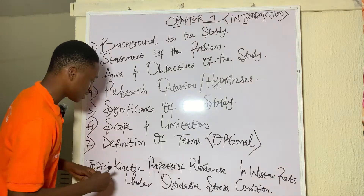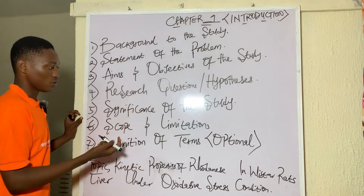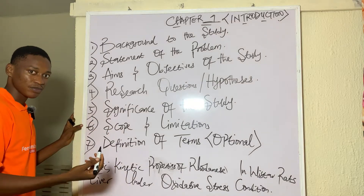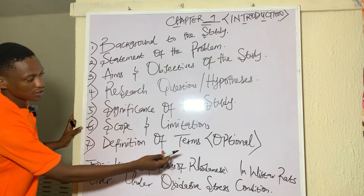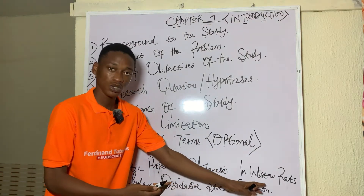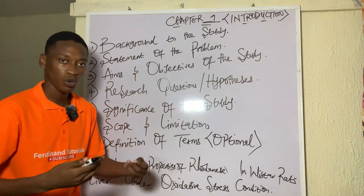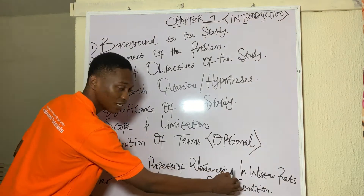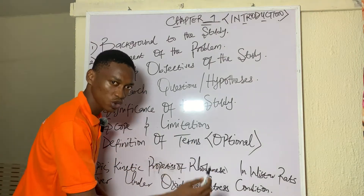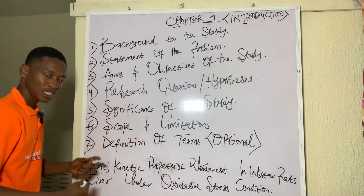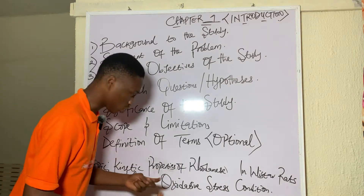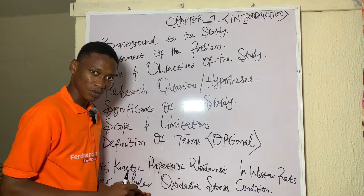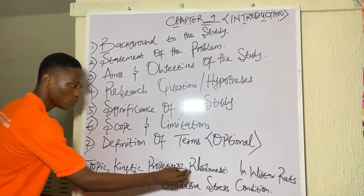For instance, with our topic, in the background I might say: rhodanese is a detoxifying enzyme in cyanide metabolism. The properties of rhodanese in the liver of Wistar rats have been explored scientifically. However, the kinetic properties of Wistar rat liver rhodanese under oxidative stress condition are underexplored. So my new study is trying to show or bring into consideration the kinetic properties of Wistar rat liver under oxidative stress condition.